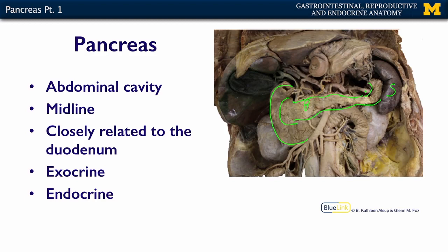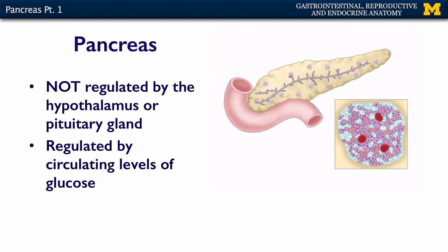It has an exocrine portion, which you've talked about in the GI MOOC, and the endocrine portion is what we're going to talk about today in this lecture. The pancreas is one of the few endocrine organs that's not regulated by the hypothalamus or the pituitary gland — it is regulated by circulating levels of blood glucose.